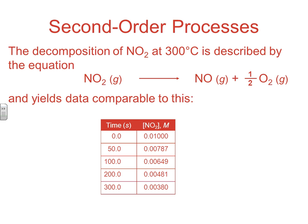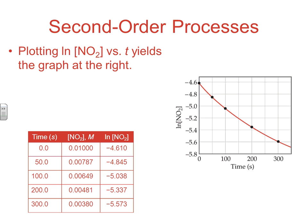In a typical second order process, like the decomposition of NO2, we have concentration versus time data. Remember, before we had concentration versus initial reaction rate — that was our differential situation. In integrated rate law, we always get concentration versus time data. If I graph concentration versus time, you can see it's not a linear expression, which rules out zero order. The next thing to check is the natural log of the concentration graphed versus time.